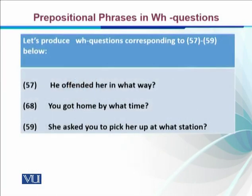Let's produce a WH question corresponding to example 57: 'He offended her in what way?' We have two options. We can say 'In what way did he offend her?' — taking the whole prepositional phrase to the front. Or, in an echo question form, 'He offended her in what way?' — not leaving the preposition stranded.